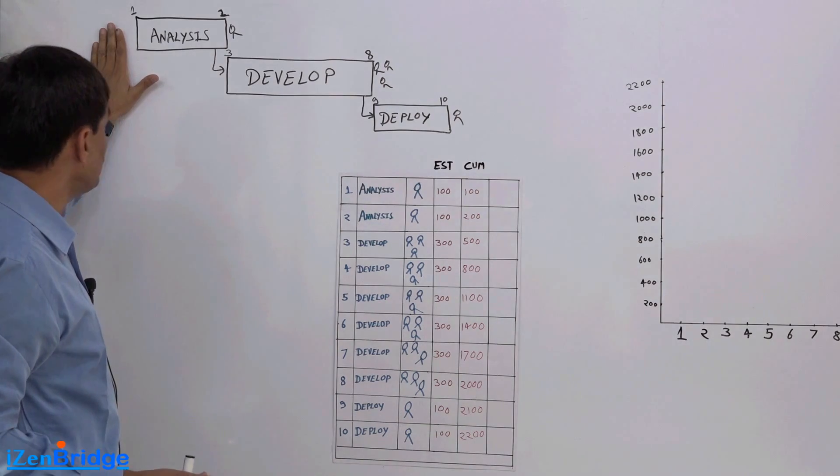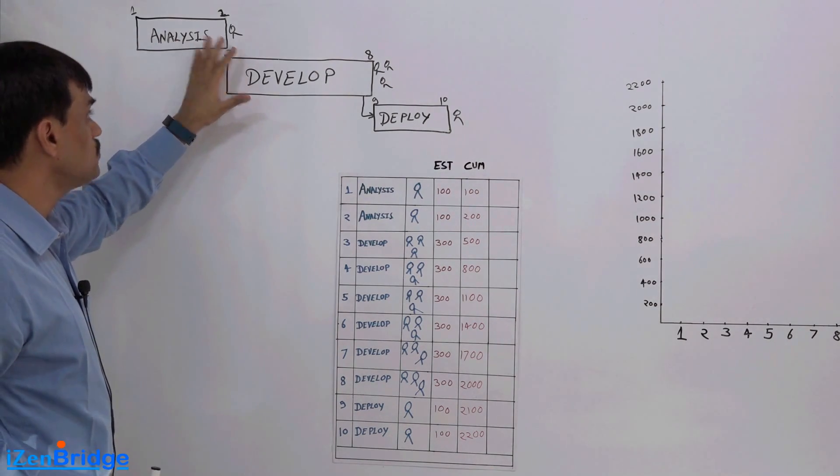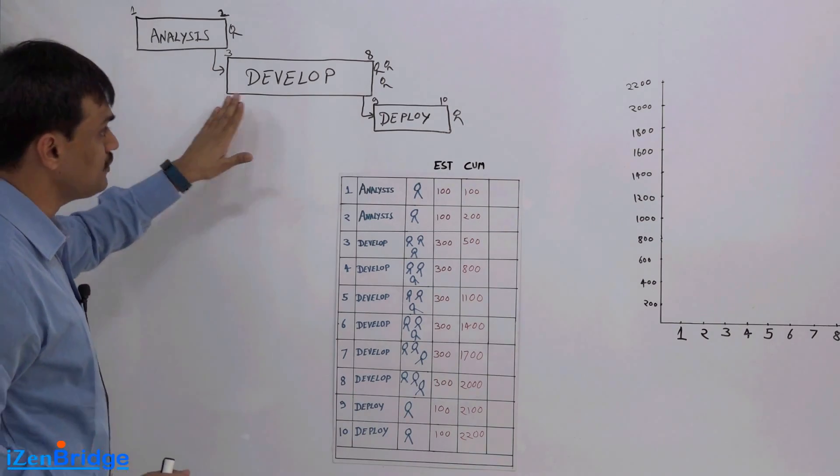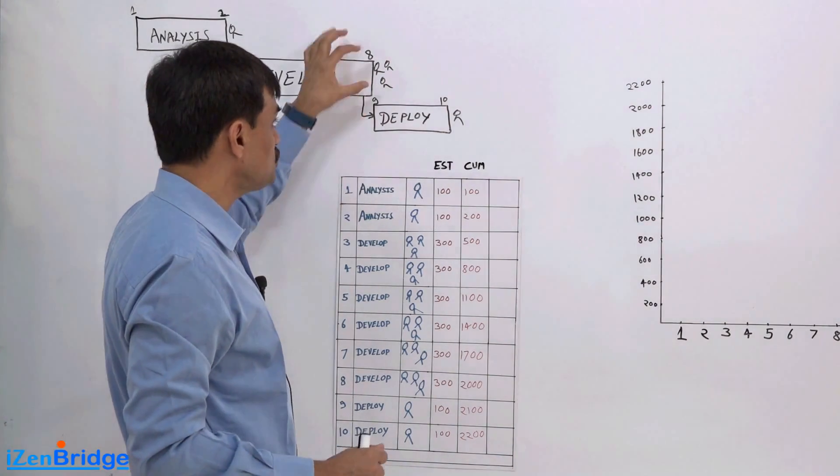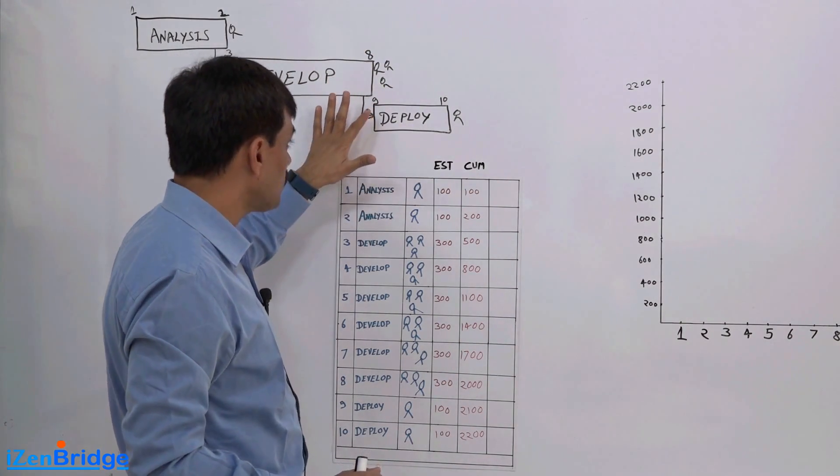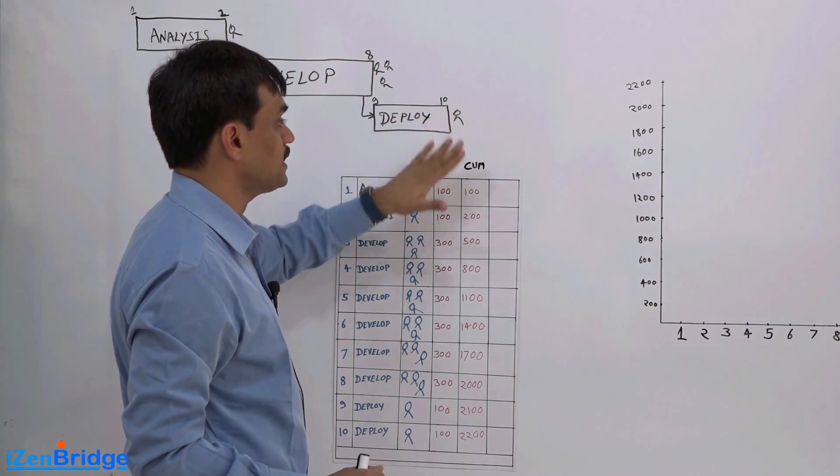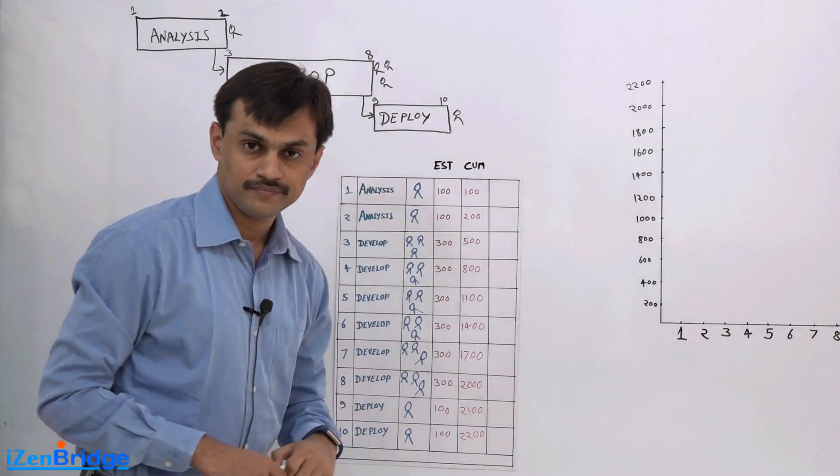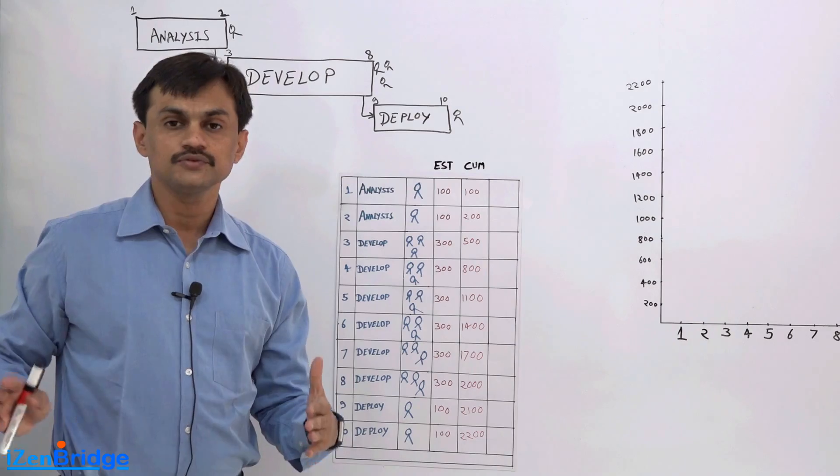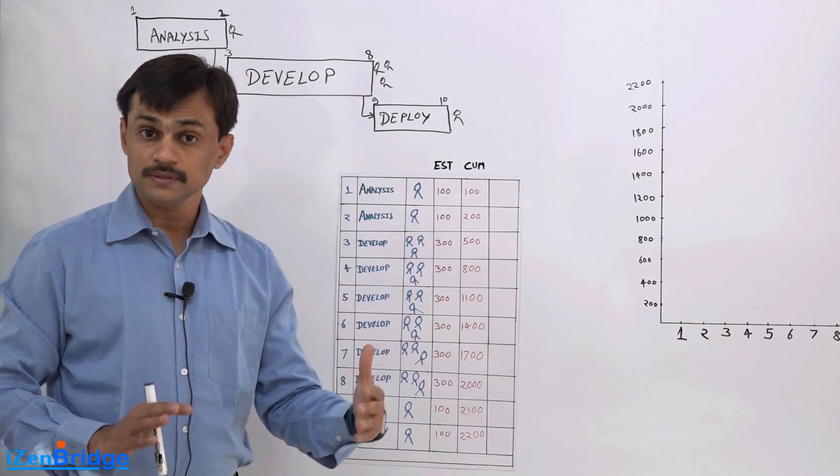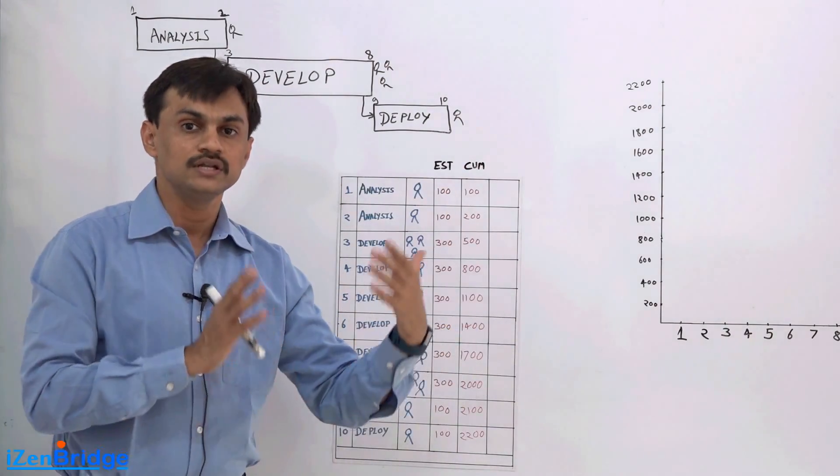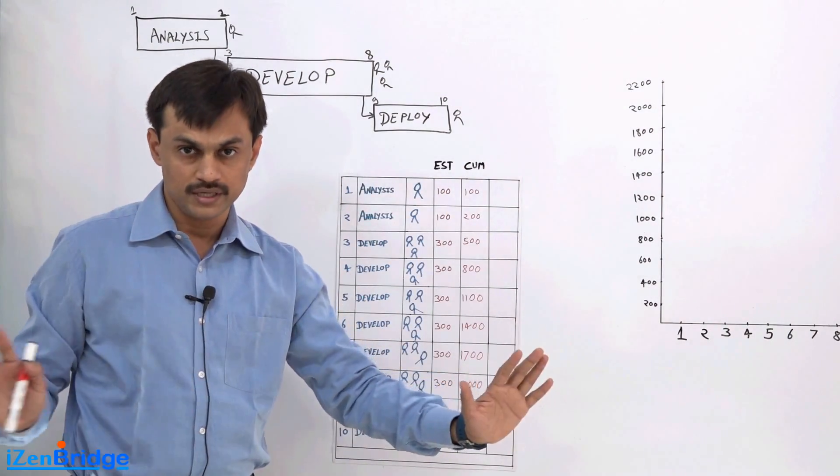I'm starting it on day 1 finishing the analysis on day 2 with one person working on it, then I'm starting development on day 3 and finishing it on day 8 with 3 people working on it, and I'm starting the deployment on day 9 and finishing on day 10 with 1 person working on it.